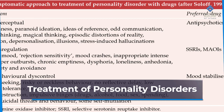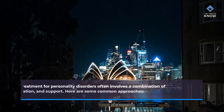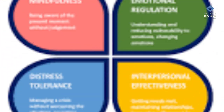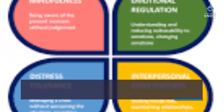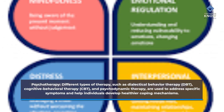Treatment for personality disorders often involves a combination of psychotherapy, medication, and support. Different types of therapy, such as dialectical behavior therapy (DBT), cognitive behavioral therapy (CBT), and psychodynamic therapy, are used to address specific symptoms and help individuals develop healthier coping mechanisms.